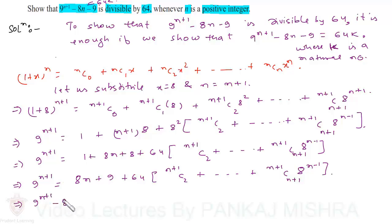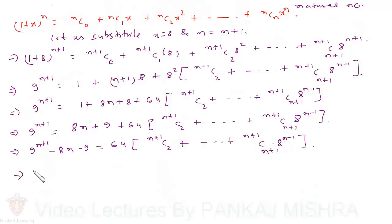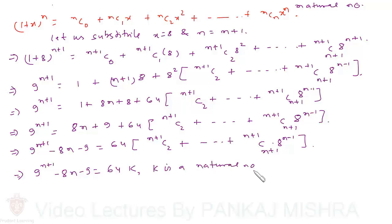This implies 9 raised to n plus 1, taking the terms 8n and 9 to the left hand side, gives us minus 8n minus 9 equals 64 times of (n+1) C 2, all the way up to (n+1) C (n+1) times 8 raised to n minus 1. This can also be written as 9 raised to n plus 1, minus 8n, minus 9 equals 64 times k, where k is a natural number whose value is the bracketed quantity on the right hand side.